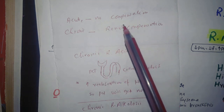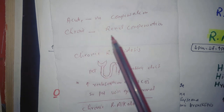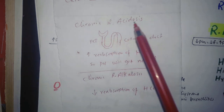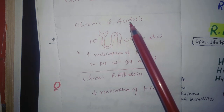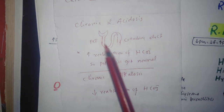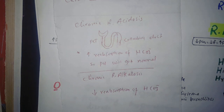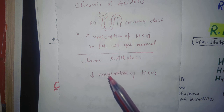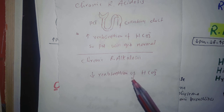For acute respiratory acidosis or alkalosis there is no compensation, but for chronic forms there is renal compensation. In chronic respiratory acidosis, the body has excess acid, so HCO3 absorption increases from the proximal convoluted tubule and collecting duct to normalize pH. In chronic respiratory alkalosis, the body has excess base, so HCO3 absorption in the kidney decreases.